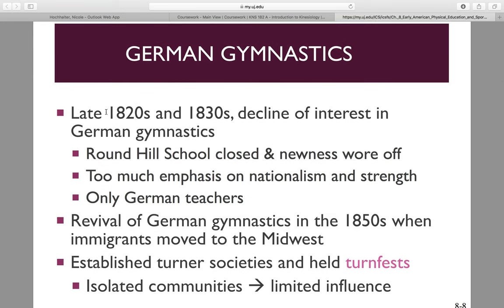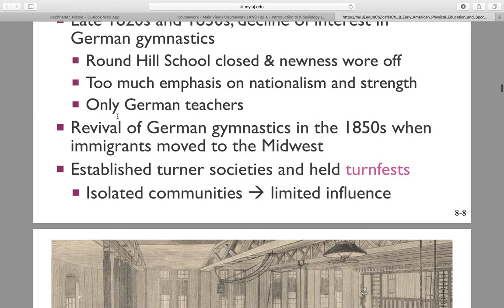In the late 1820s and 1830s, there was a declined interest. The Round Hill School closed — essentially the newness wore off. It was no longer new and did not last. There was too much emphasis on nationalism and strength, and they would only allow German teachers to educate at the Round Hill School. There was a revival of German gymnastics in the 1850s when more immigrants moved to the Midwest. They established Turner Societies and held turn fests, but this led to isolated communities and limited influence.